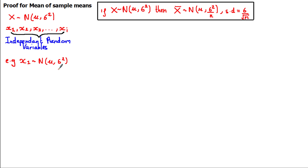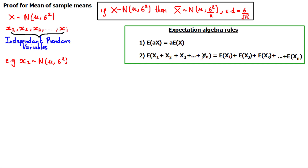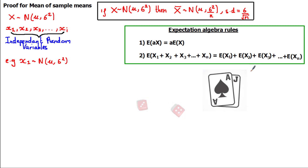Each observation, for example x sub 1, is also normally distributed with a mean mu and a variance sigma squared. To prove this result for the means we need to know some rules about expectation algebra — algebraic properties useful for calculations involving measures of central tendency and spread. Rule one: the expected value of a constant a multiplied by a random variable x equals a times the expected value of x. Rule two, the linearity of expectation: the expectation of a sum of random variables equals the sum of the expectations of the individual variables.